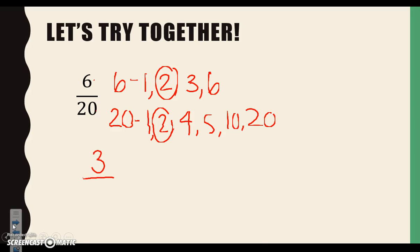We have our numerator. We have to do the same thing for 20. Remember that we're working with 2. 20 divided by 2 gives me what? When we wrote out our factors, remember we said that 2 times 10 gives me 20. So 20 divided by 2 will give me 10. We have our fraction in simplest form. You can always take a look at your fraction when you think you have it as low as it can go. We have 3 tenths.